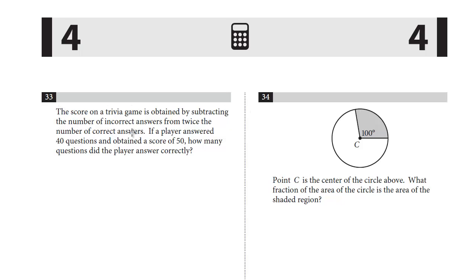Question 33: The score on a trivia game is obtained by subtracting the number of incorrect answers from twice the number of correct answers. If a player answered 40 questions and obtained a score of 50, how many questions did the player answer correctly?